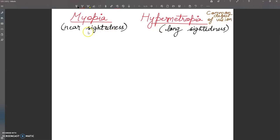First, let's discuss myopia. Myopia is near-sightedness. The problem here is that the person cannot see distant objects clearly. However, the person can see nearby objects very well.